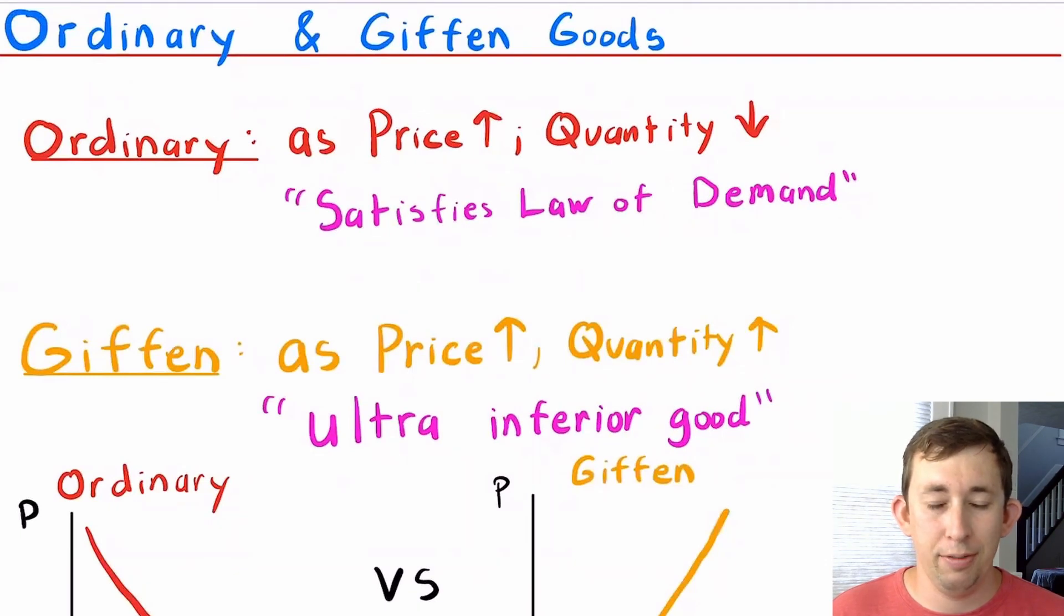So ordinary good, I like to think of ordinary as well, it's just ordinary, it satisfies the law of demand, which means as the price of the good goes up, the quantity that I buy of that good goes down.